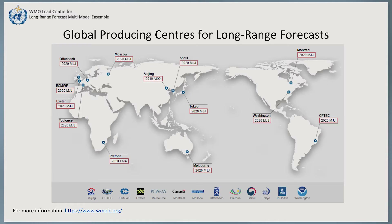So not everyone can be making these seasonal forecasts. At the time of recording this video, there are 13 centres across the world designated by the World Meteorological Organisation, or WMO, as global producing centres of seasonal forecasts. A list of these forecast models and their characteristics are listed on the WMO lead centre website.